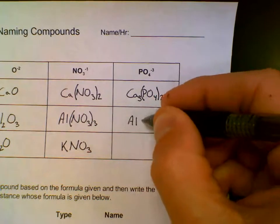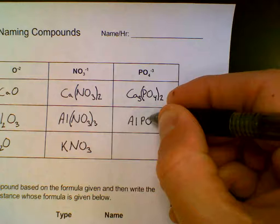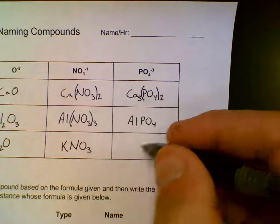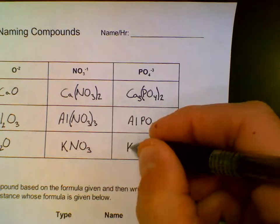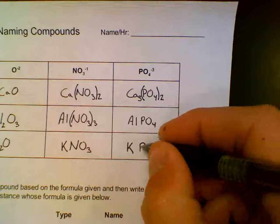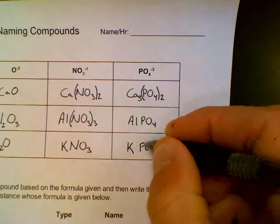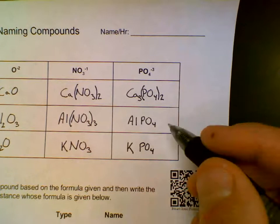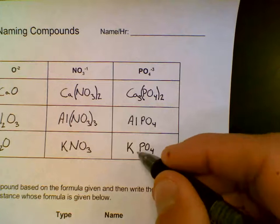Al plus 3, PO4 minus 3 cancels. We can just write AlPO4. Then the potassium plus 1, PO4 minus 3. The 1 goes on the back end of phosphate, we don't need to write that. The 3 goes on the K, giving K3PO4.